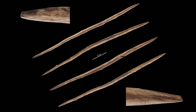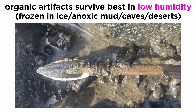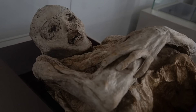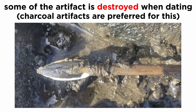Other ways exist of obtaining preserved carbon artifacts. Organic artifacts sustained in low humidity environments have a much better chance of surviving the passage of time. This can occur in a variety of ways, such as being frozen in ice, trapped in anoxic mud, or placed in caves or deserts. This is how mummies can still have flesh after thousands of years. However, the artifact, or a piece of it, must be destroyed in performing the C-14 analysis. This is why artifacts with little cultural value, such as charcoal, are preferred.